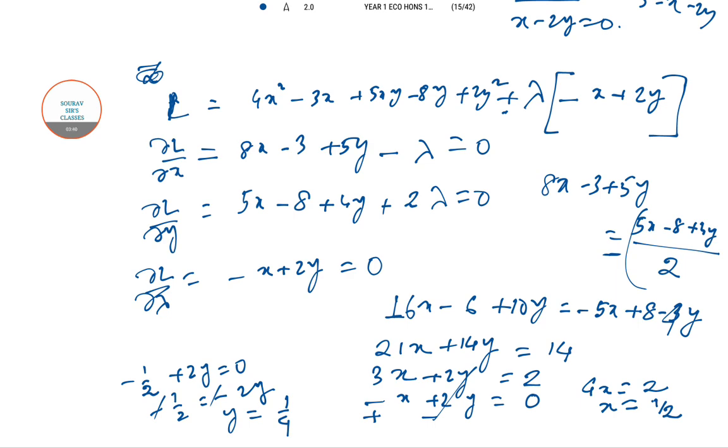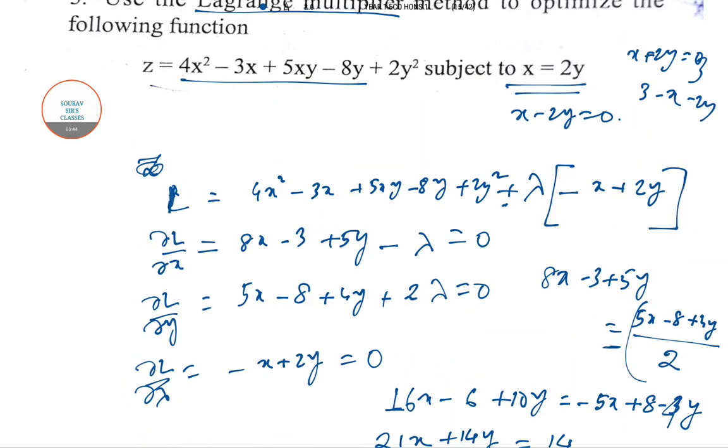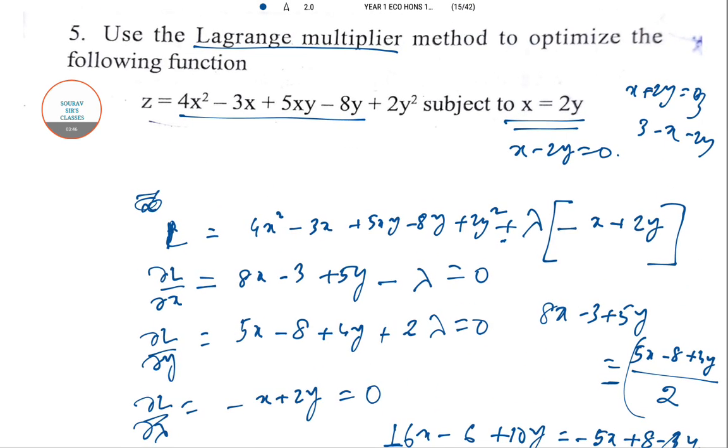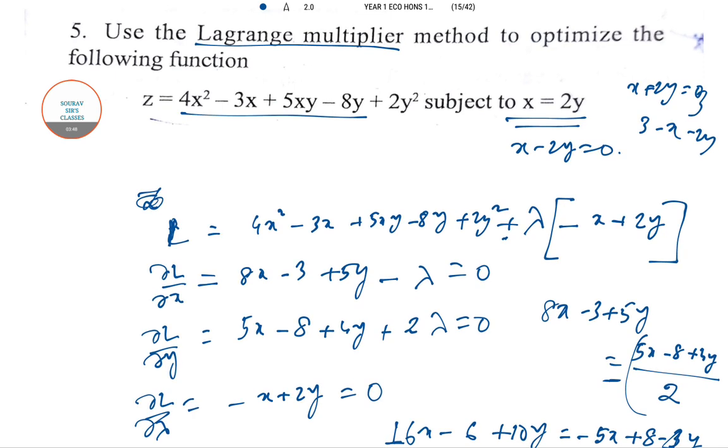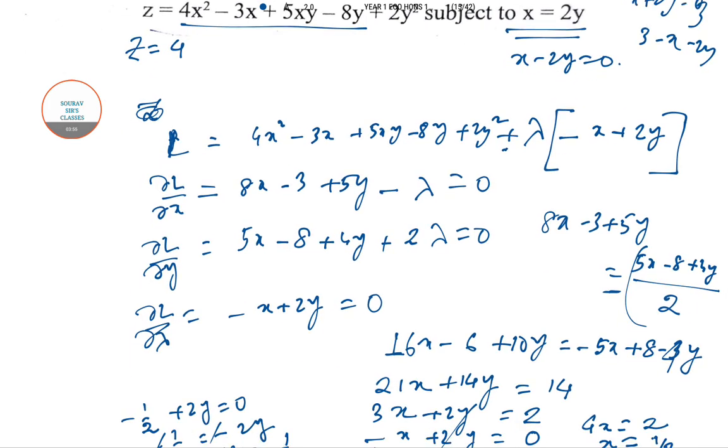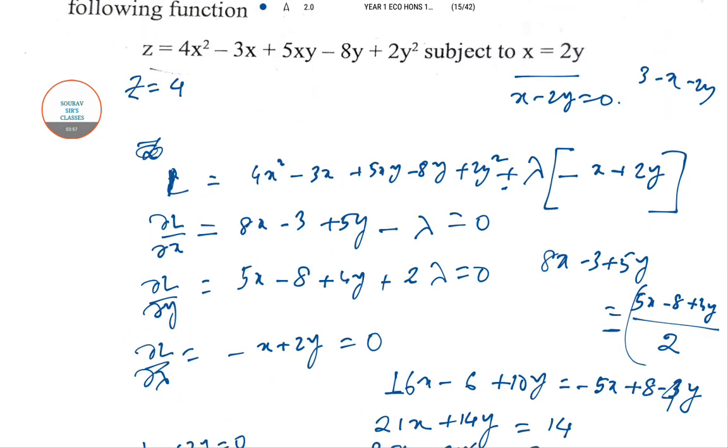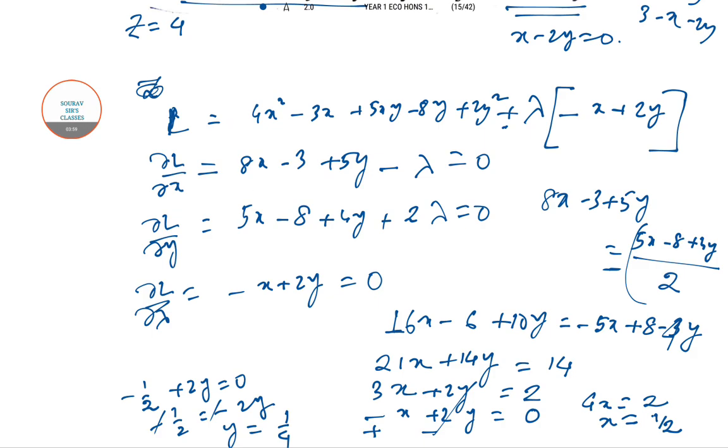And put it into any equation. x equal to minus half plus 2y equal to 0, so minus half equal to minus 2y, and y equal to 1 by 4. So x equal to half and y equal to 1 by 4 is the answer from the Lagrangian structure.